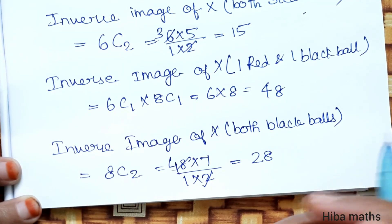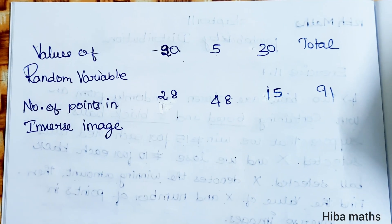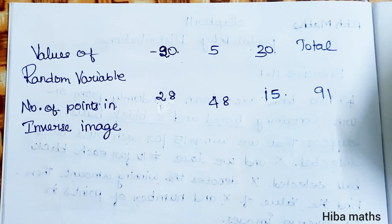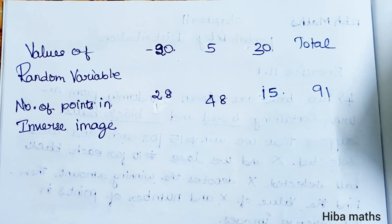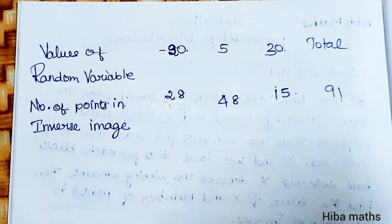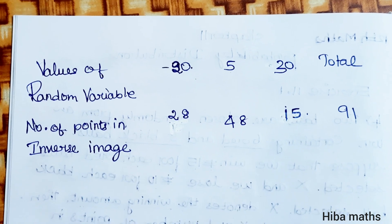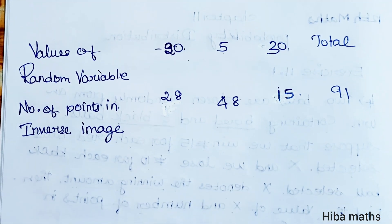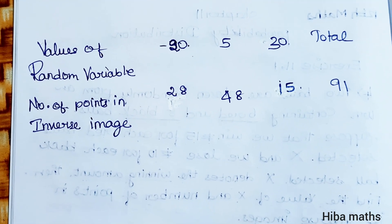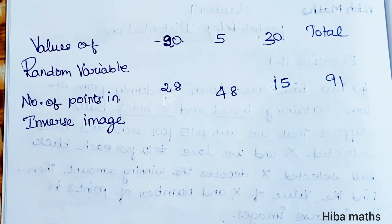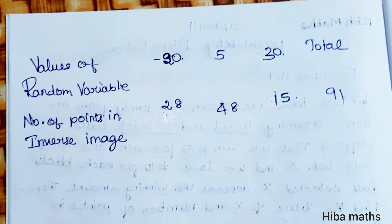Now the table: the value of the random variable x and the number of points in the inverse image. x = −20 gives 28; x = 5 gives 48; x = 30 gives 15. The total is 191. Thank you so much for watching.